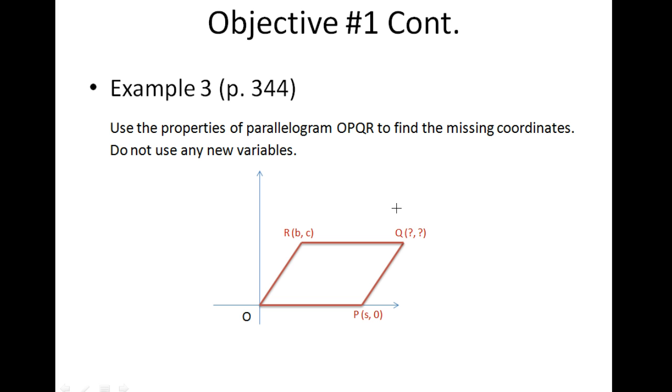So because Q and R lie on the same line, the same horizontal line, we know that the y-coordinate for Q is going to be the same as R, because they both lie on the same line that crosses the y-axis at the same point. So we know that the y-coordinate for Q is going to be C.